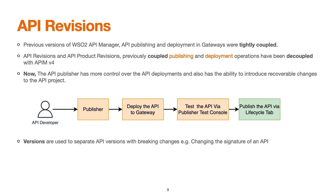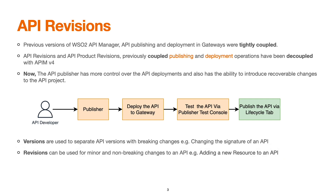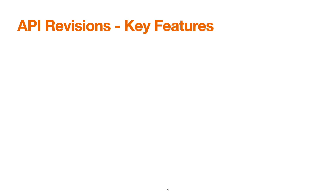Versions are used to separate API versions with breaking changes — for example, changing the signature of an API — while revisions can be used for minor and non-breaking changes to an API, such as adding a resource. What are the key features of API revisions?